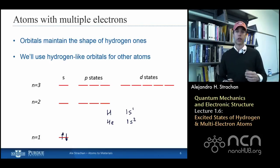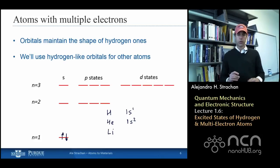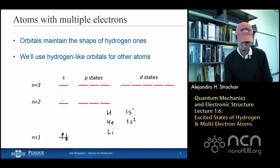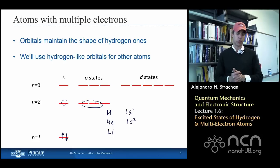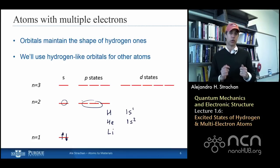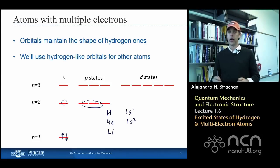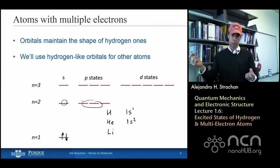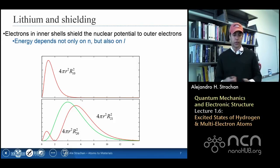The next atom in the periodic table with three electrons is lithium. The third electron needs to decide whether it goes to the 2s or the 2p orbital. In principle for hydrogen, those states are all degenerate — they all have the same energy. But let's think more carefully about what happens with lithium. For hydrogen, 2s and 2p have exactly the same energy because the electron sees a bare proton with a 1/r potential.